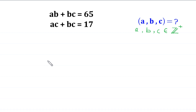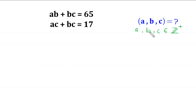Hello everyone, you are welcome. We are going to solve this very nice system of equations: AB plus BC is equal to 65, and AC plus BC is equal to 17. Our job is to find all possible values of A, B, and C such that A, B, and C are positive integers. So, let us start.